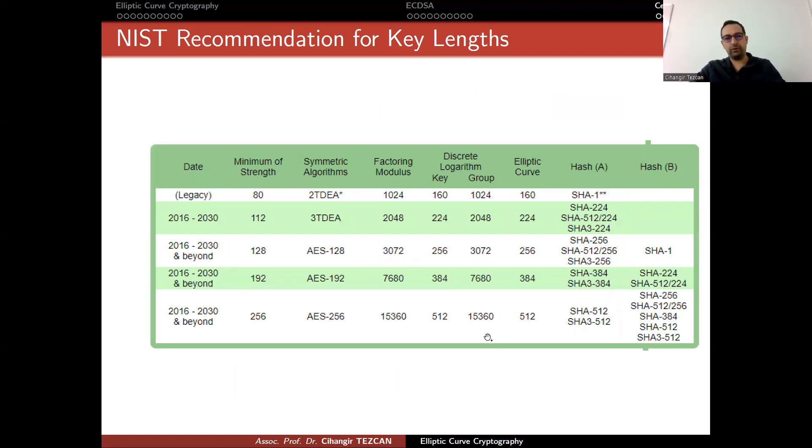Before finishing, let's talk about key sizes. We talked about symmetric key cryptography first. We said that 128-bit security is suggested for personal use. Less than 128 is never suggested, but if you want military-grade security, you can use AES-256.